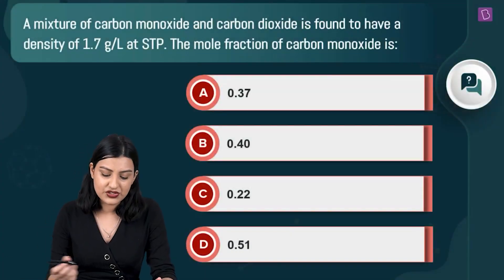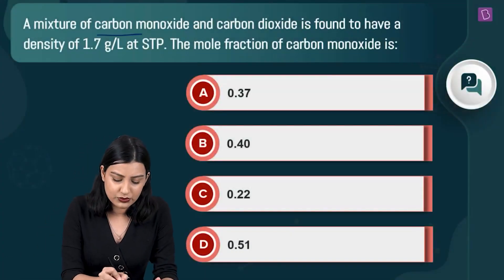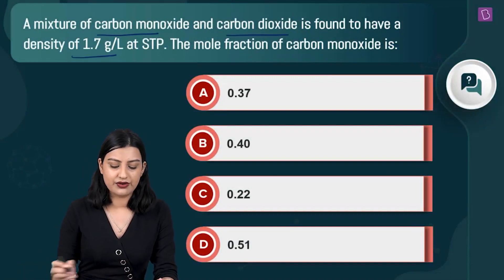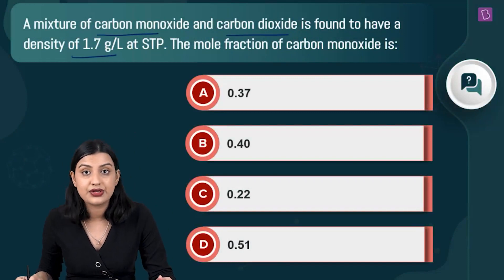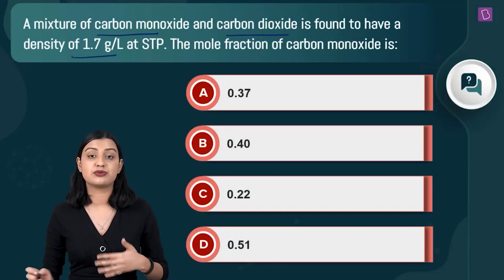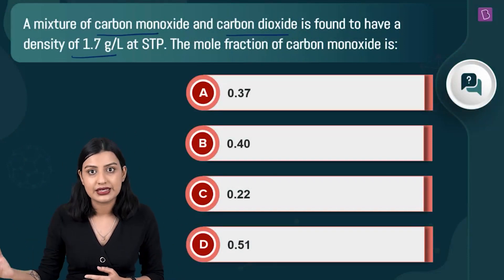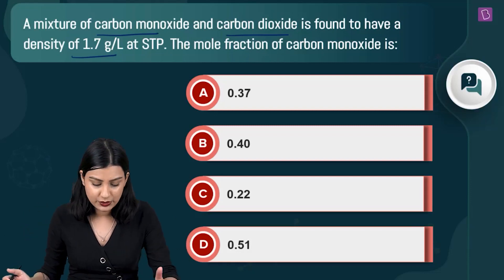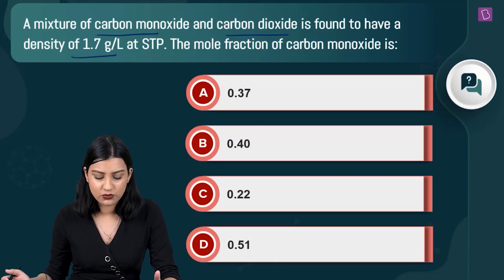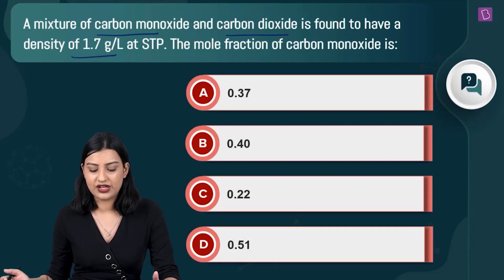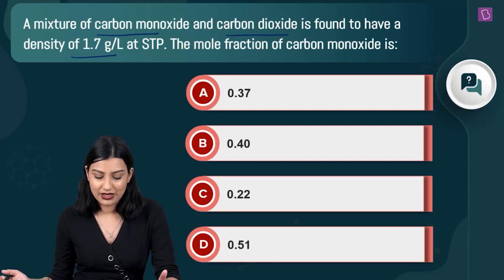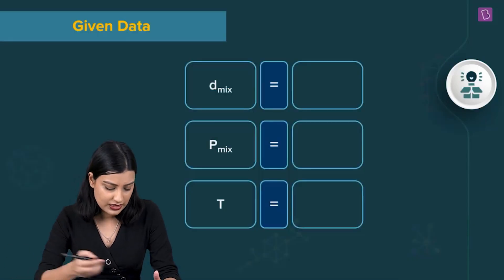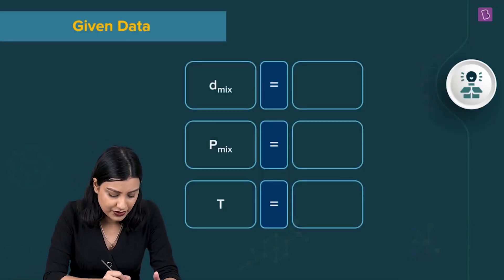Here they're saying that you have a mixture of carbon monoxide and carbon dioxide which has a density of 1.7 grams per liter at STP — standard temperature and pressure — which means temperature is 0 degrees Celsius, so 273 Kelvin, and pressure is 1 atm. The mole fraction of carbon monoxide is going to be what? Let's look at the options and fill in the given data first.